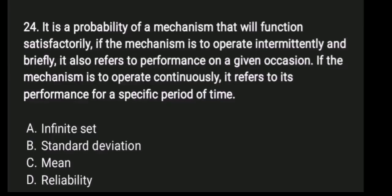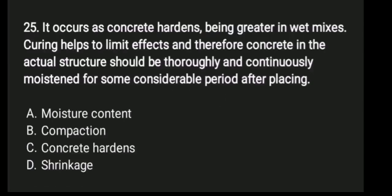24. It is a probability or mechanism that will function satisfactorily. If the mechanism is to operate intermittently and briefly, it also refers to performance on a given occasion. If the mechanism is to operate continuously, it refers to its performance for a specific period of time. A. Infinite set, B. Standard deviation, C. Mean, D. Reliability. Answer: D. Reliability.